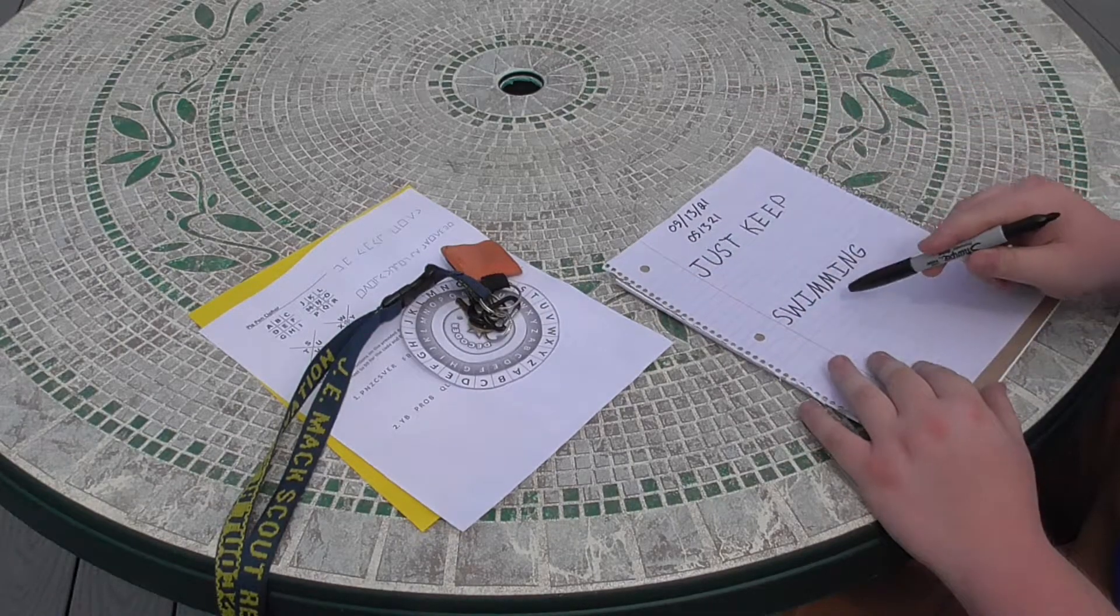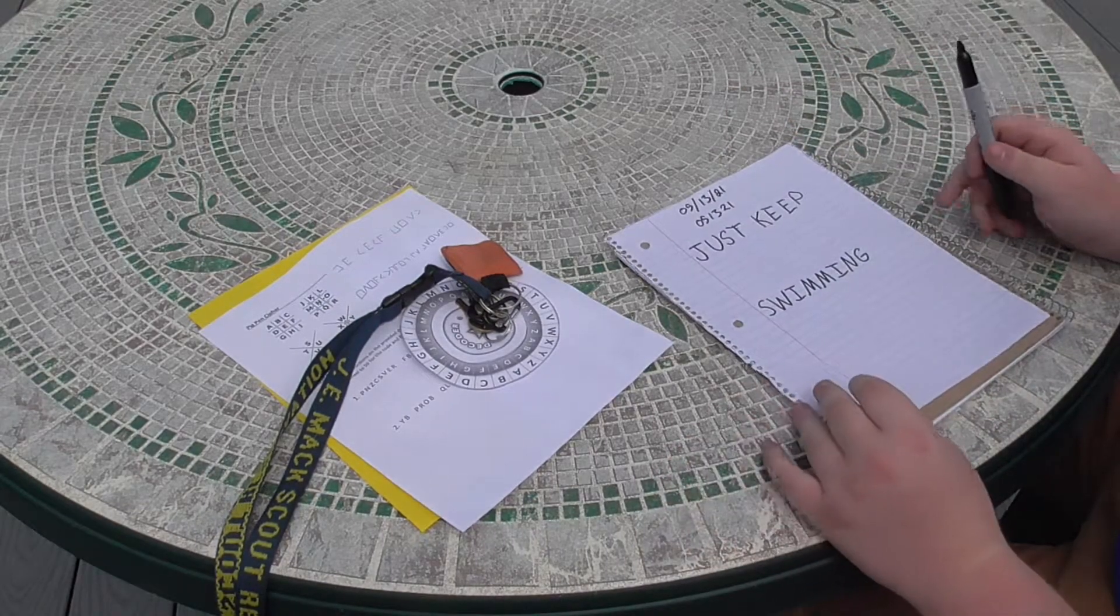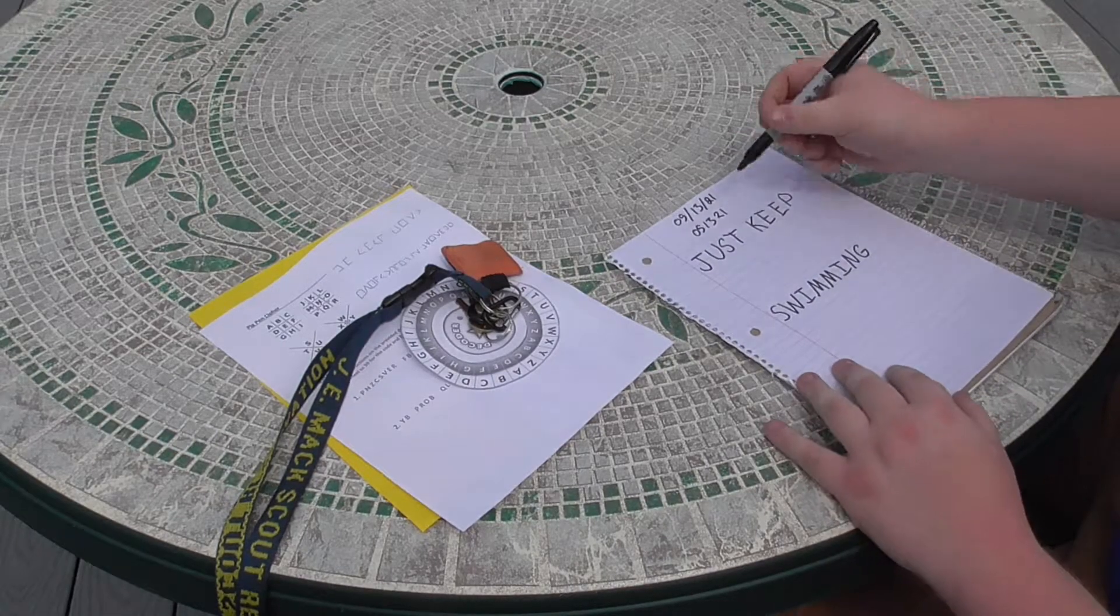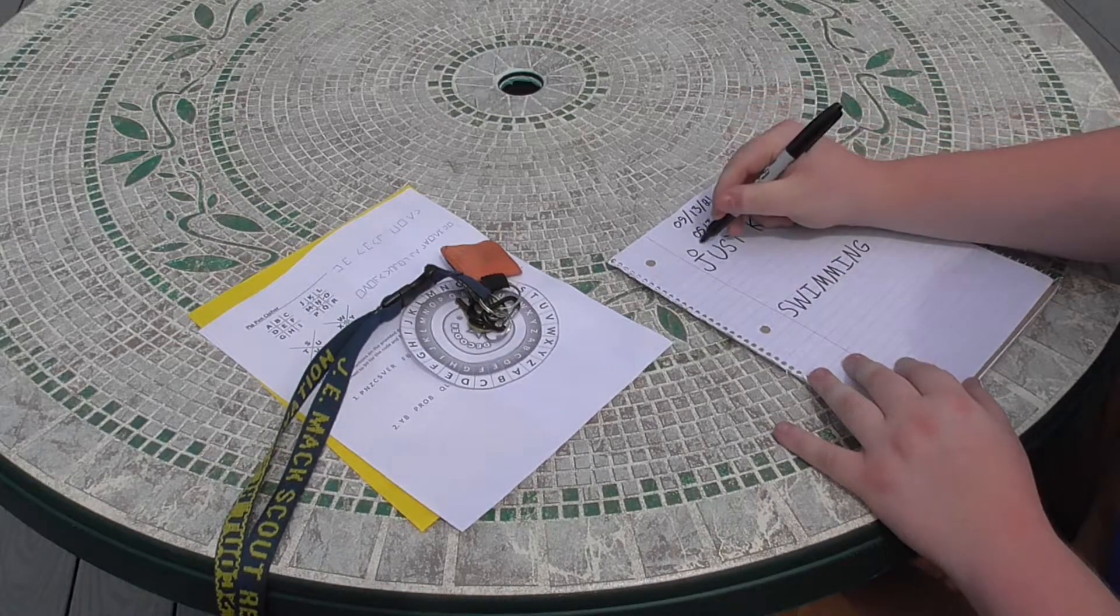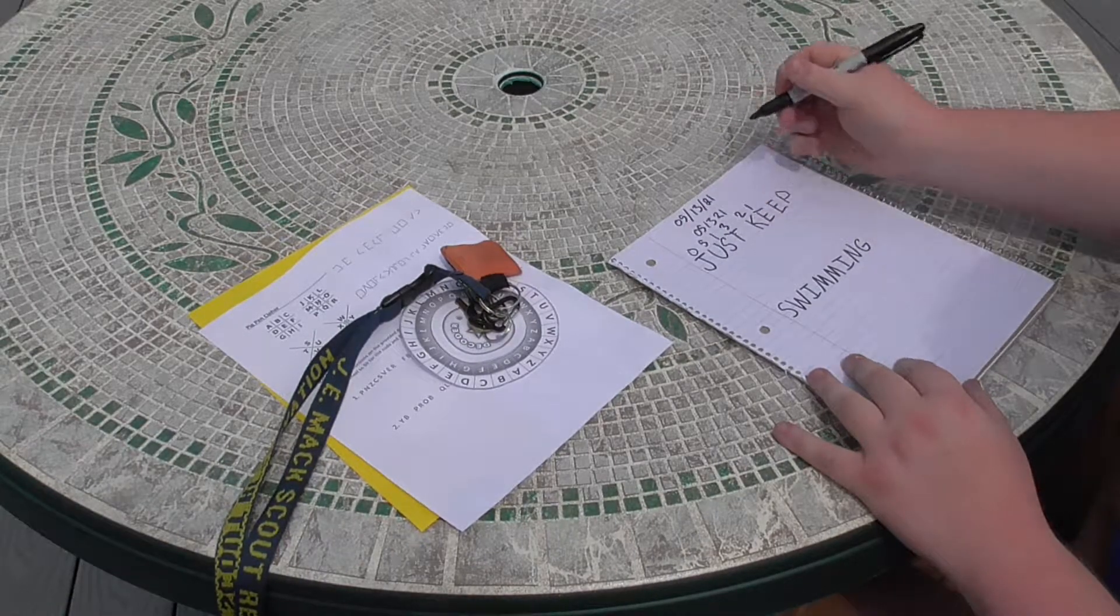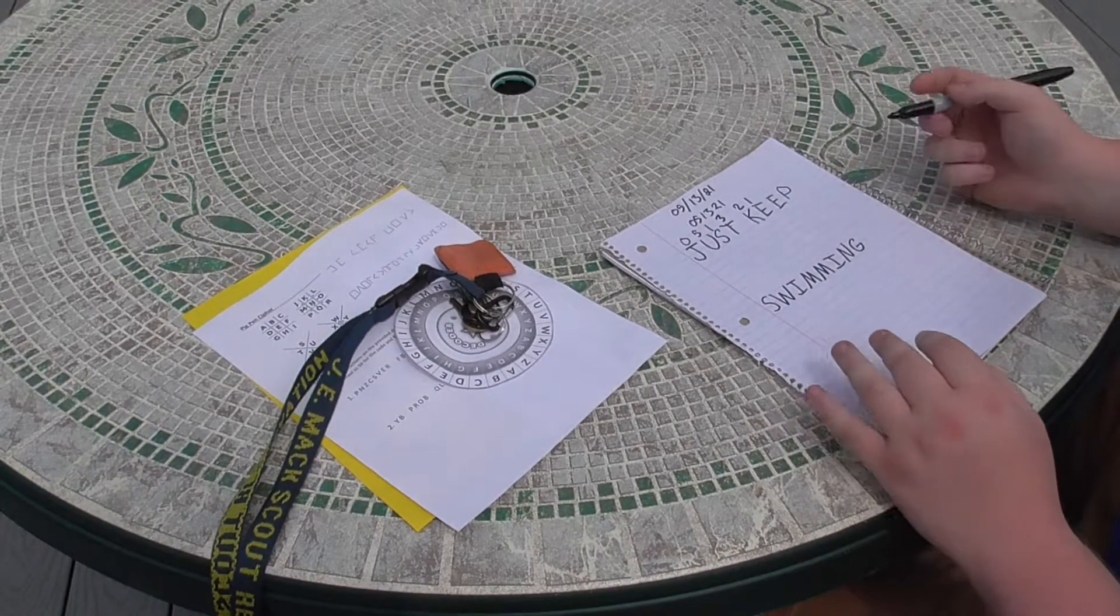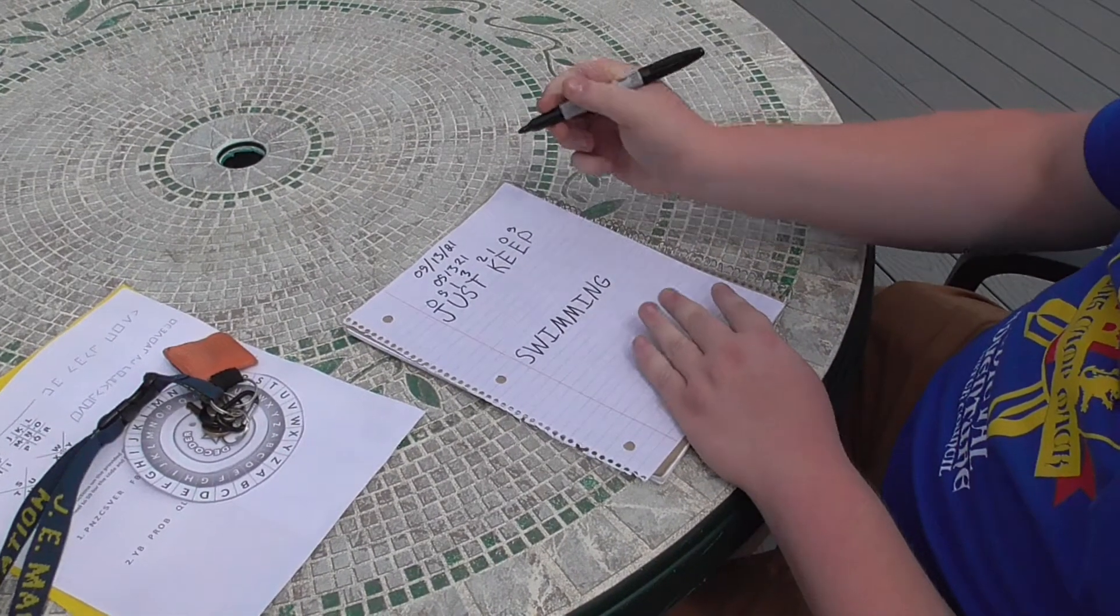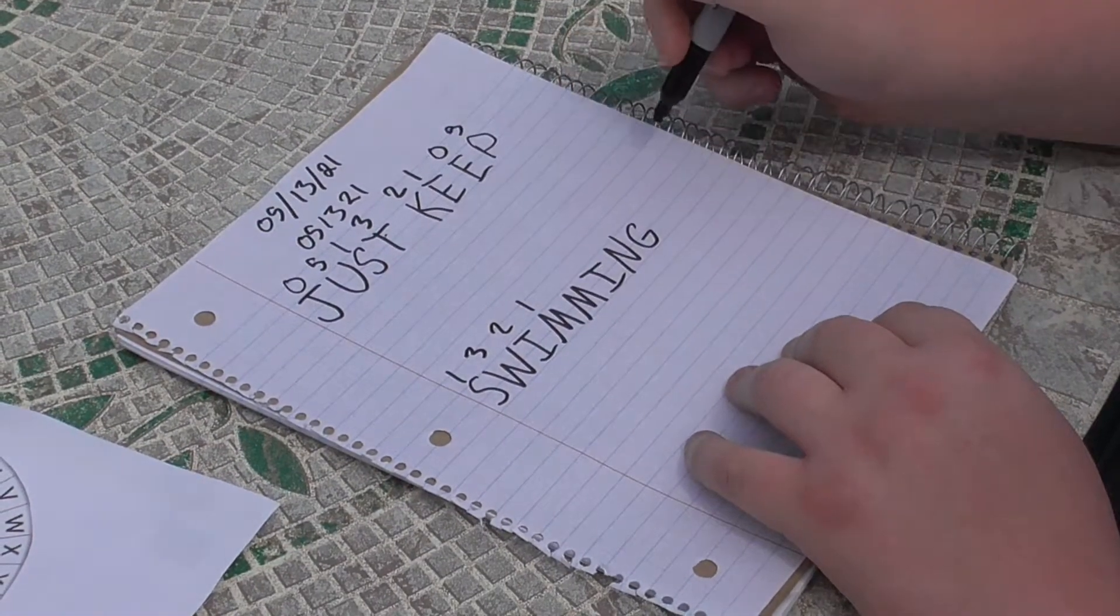You should write out your message like I did. Our message is just 'keep swimming,' the famous quote by Dory from Finding Nemo. Now what I like to do is take our code and write the numbers above our code: 0-5-1-3-2-1. But wait, I ran out of the code but I still have letters left. You just take your code and repeat it until all your numbers are over letters.